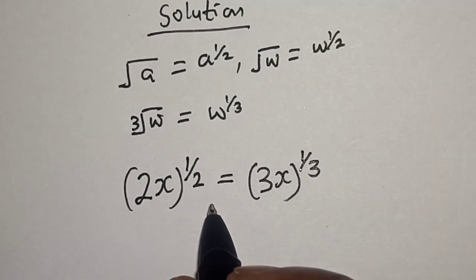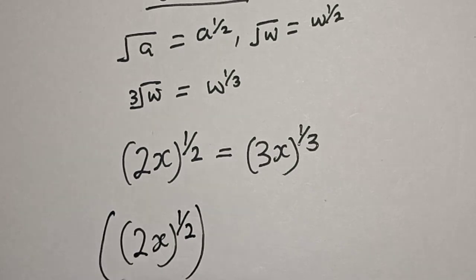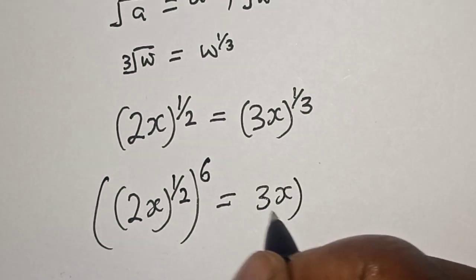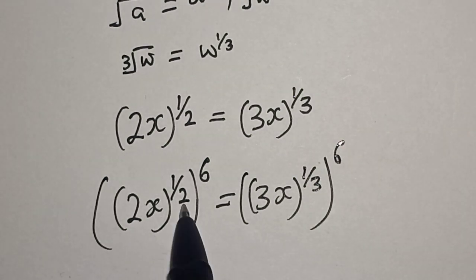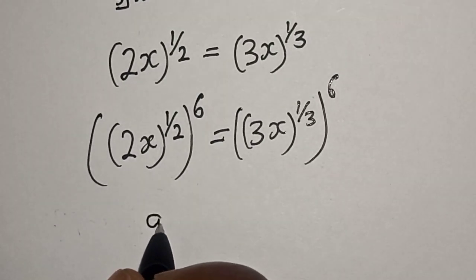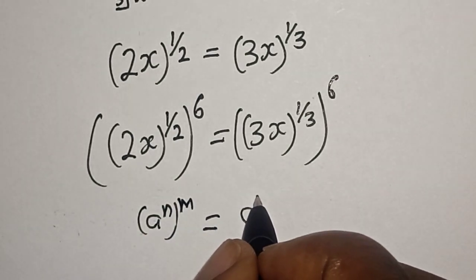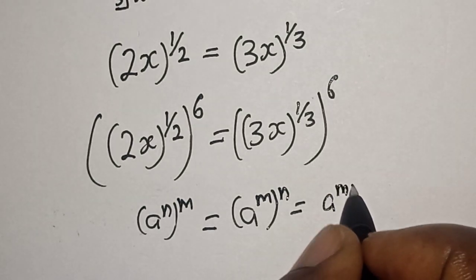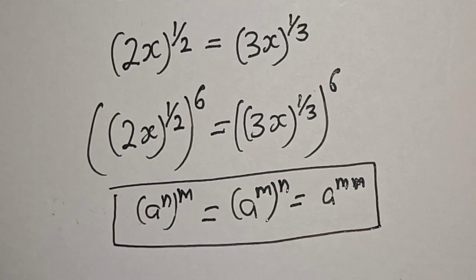Now let's raise both sides to the power of 6. We have 2x raised to power 1 over 2, then raised to power 6, is equal to 3x raised to power 1 over 3, raised to power 6. Remember the rule: a raised to power n, raised to power m, is equal to a raised to power m×n.